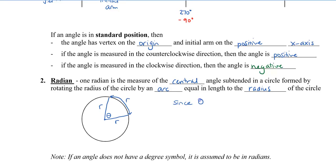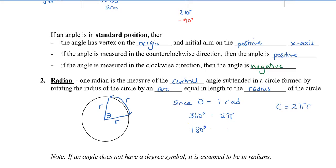Since theta is equal to 1 radian — I can abbreviate radian as RAD — we also know that 360 degrees, meaning all the way around, would give us 2 times pi, since the circumference of the circle is 2πR. Assuming this circle to have a radius of 1, that means 360 degrees is equal to 2π. So, if I divide both sides by 2, I can also say that 180 degrees is equal to π, and these are all in radians. Note: if an angle does not have a degree symbol, we're going to assume the angle is in radians.